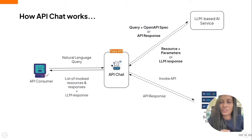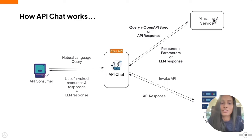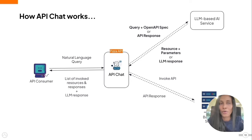I'll quickly run you through how API Chat works. An API consumer comes into the developer portal and fires a natural language query to our API Chat interface. We send this query plus the API definition to the LLM-based AI service. From there, it deduces what API resource we need to invoke and responds with the resource and parameters needed. If there's no API invocation involved, it will simply return an LLM response saying something like 'I don't have enough information to get this done, you need to be more specific,' or when the task is done, 'my task is completed.'